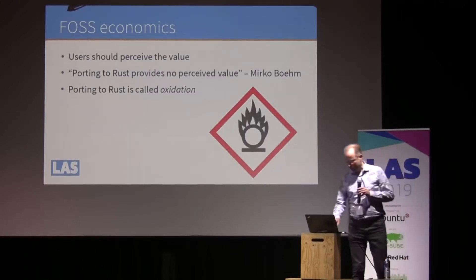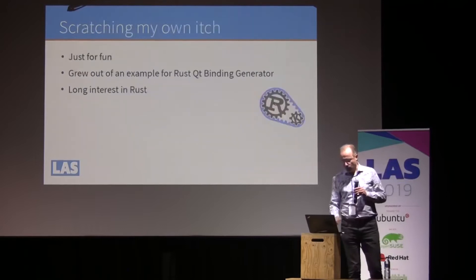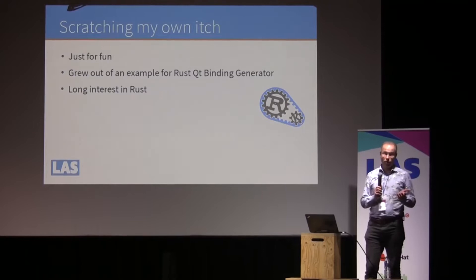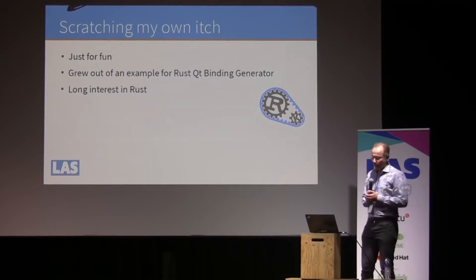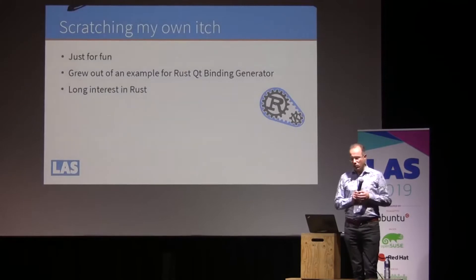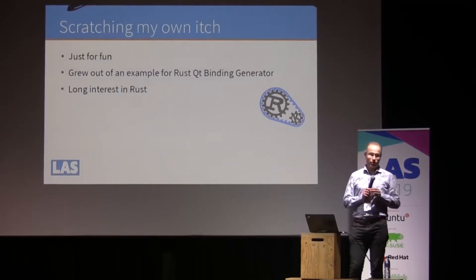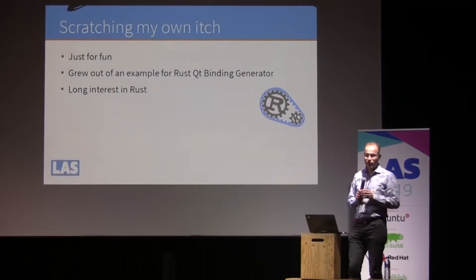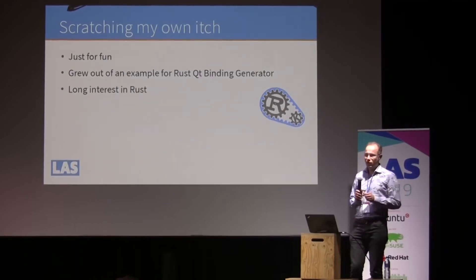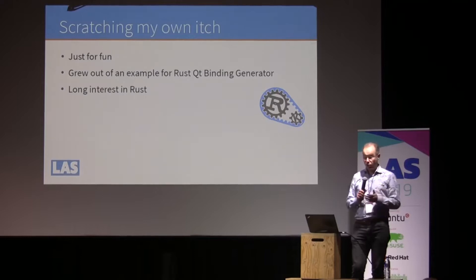So what am I doing? Well, there are other motivations than money — in this case, scratching my itch or just having a bit of fun. I wrote an email client as an example for the Rust-Qt Binding Generator. The Rust-Qt Binding Generator is a project of mine to let you write graphical user applications with Rust and Qt.